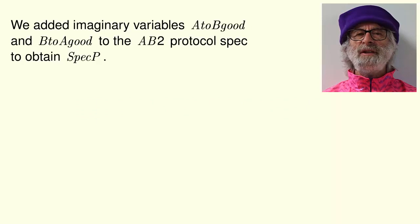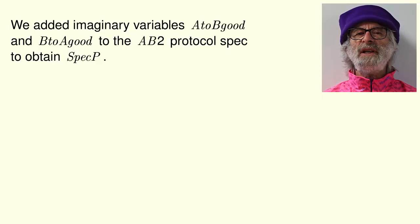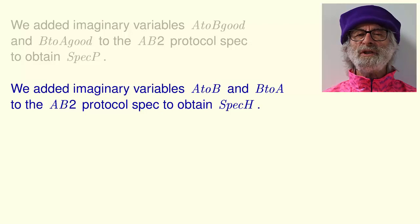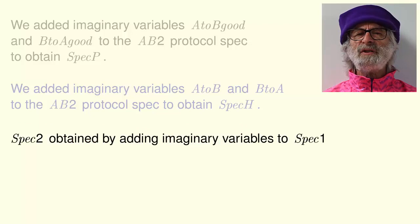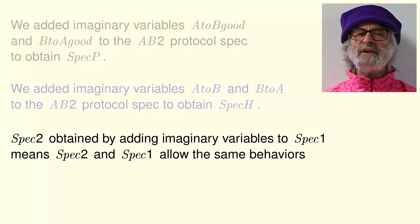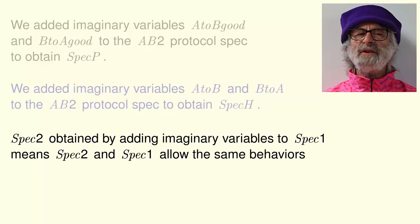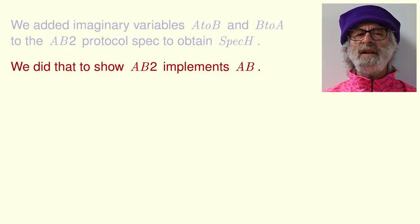We added the imaginary variables a to b good and b to a good to the AB2 protocol specification to obtain specification spec P — we did that in order to write a desired liveness property. We added imaginary variables a to b and b to a to the AB2 protocol specification to obtain specification spec H — we did that in order to show that the AB2 protocol's safety spec implements the AB protocol's safety spec.